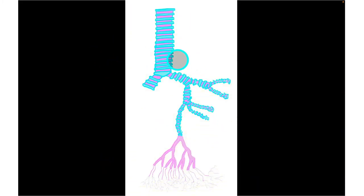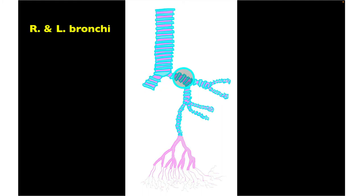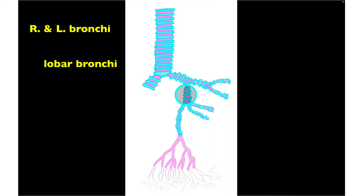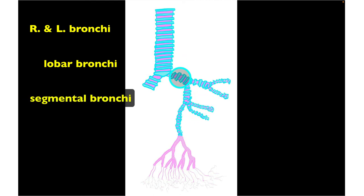The trachea bifurcates into the right and left main bronchi. The bronchi then divide into lobar bronchi, which go into the different lobes of the lungs. Those lobar bronchi bifurcate again into segmental bronchi. So we have primary bronchi — for example, the left bronchus — dividing into lobar bronchi and then segmental bronchi.